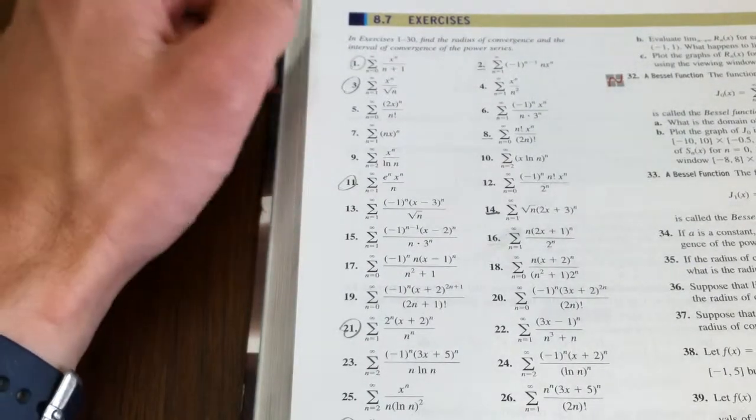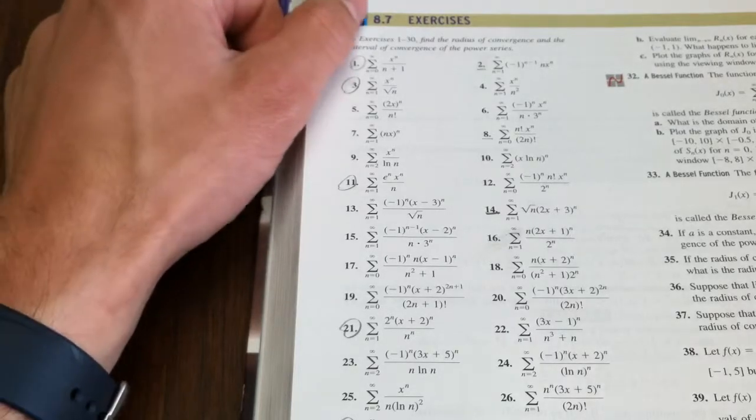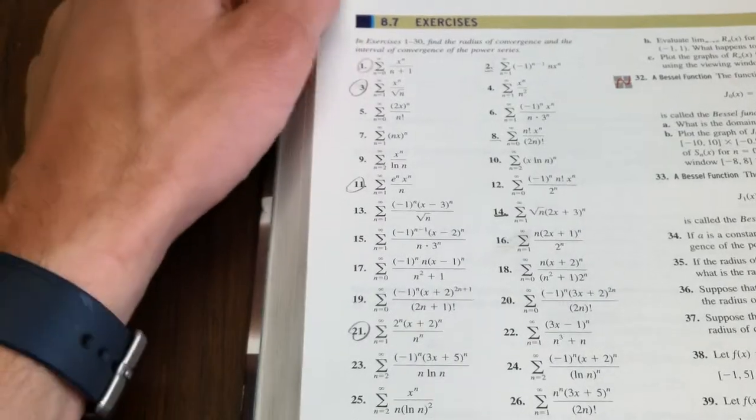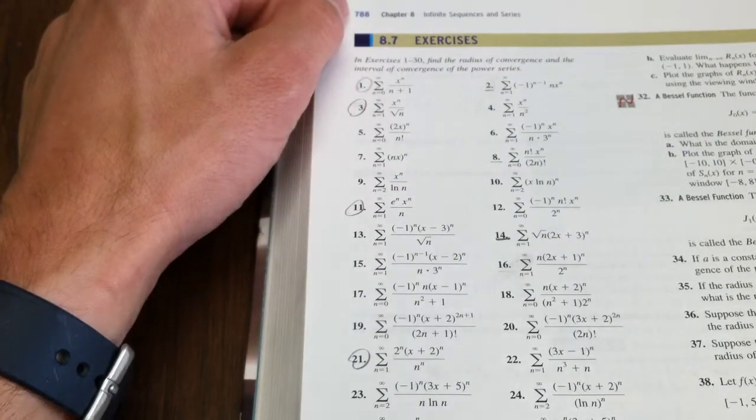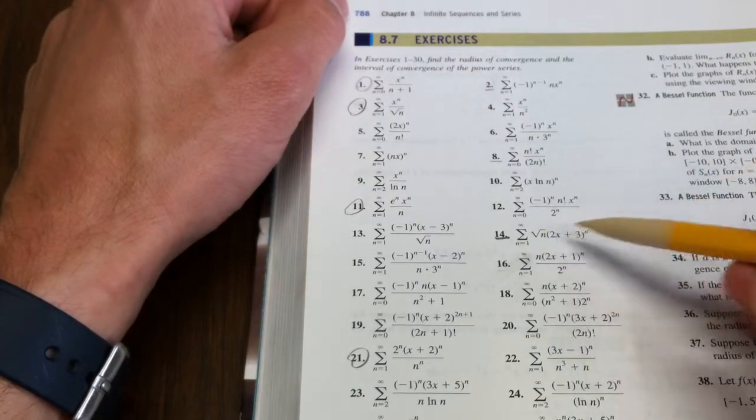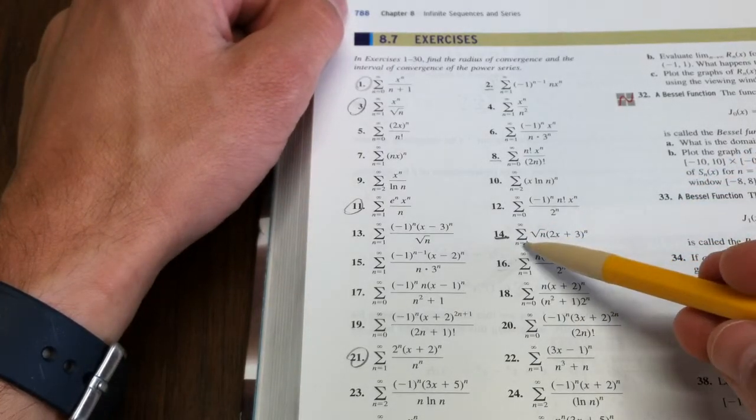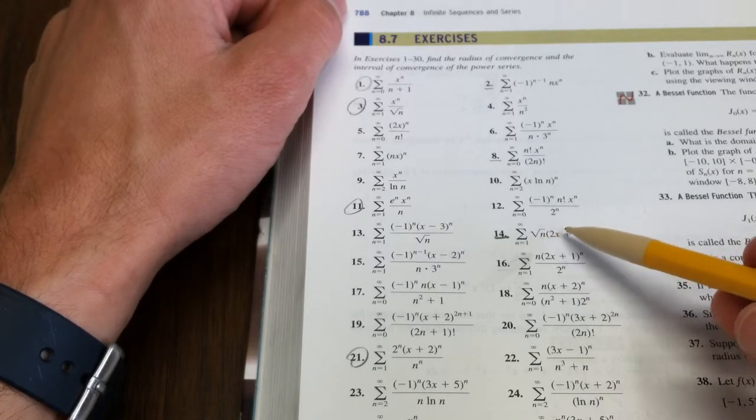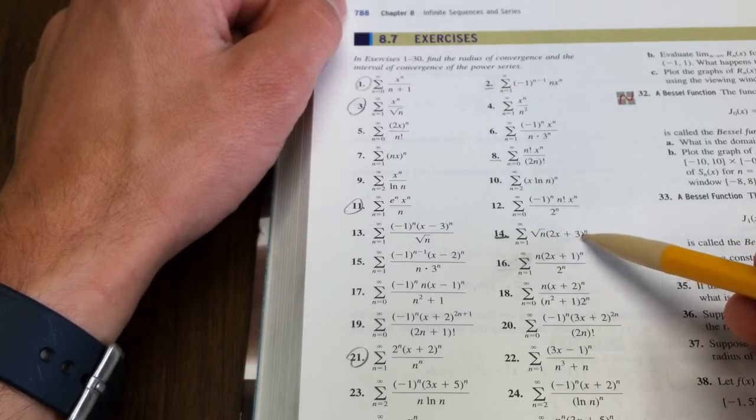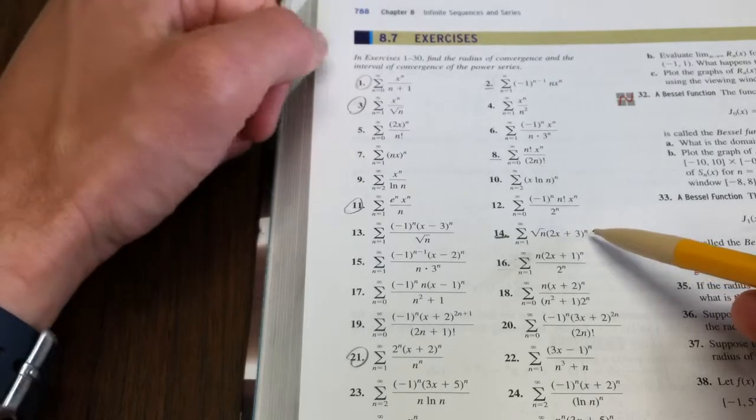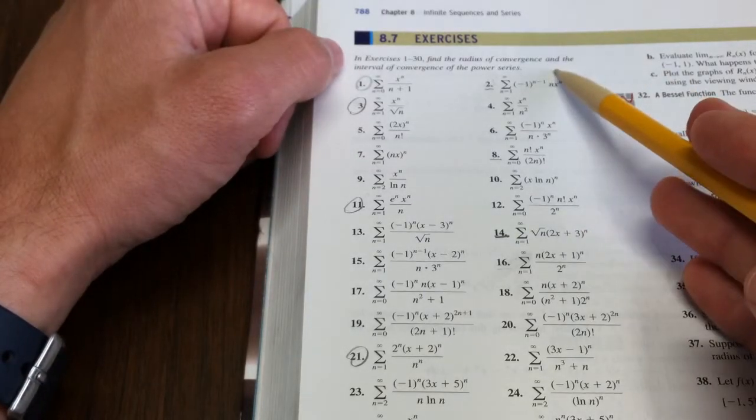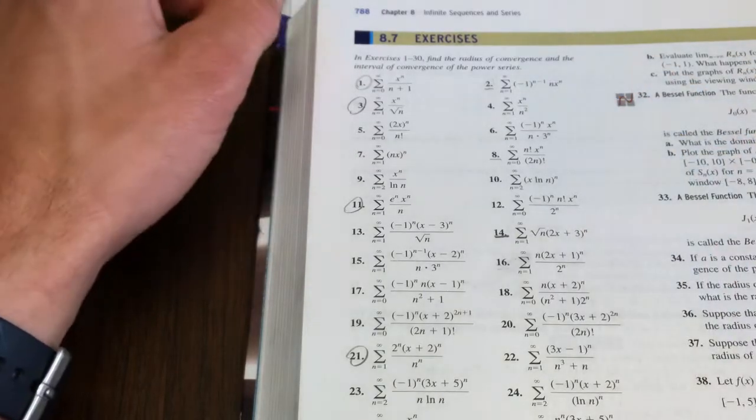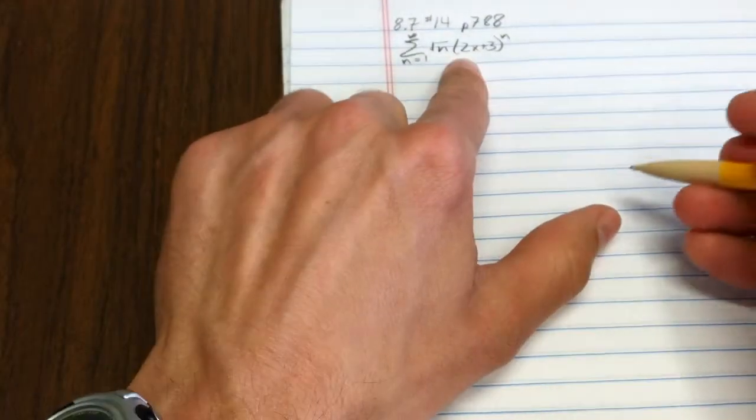We get a problem of power series today. This is in section 8.7, actually on page 788, and I'm going to work on problem 14. The series is n equals 1 to infinity of the square root of n times the quantity 2x plus 3 to the n power. We're supposed to find the radius of convergence and the interval of convergence for the power series. So I went ahead and wrote that power series down.